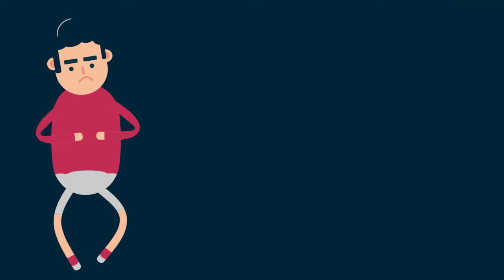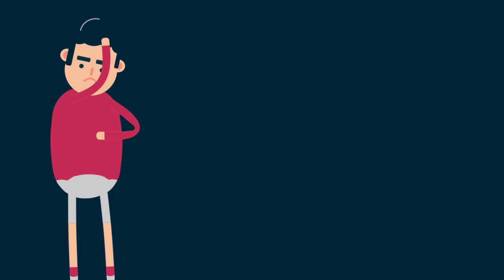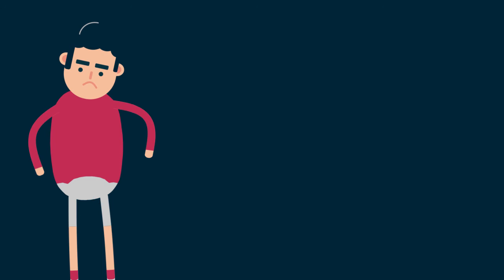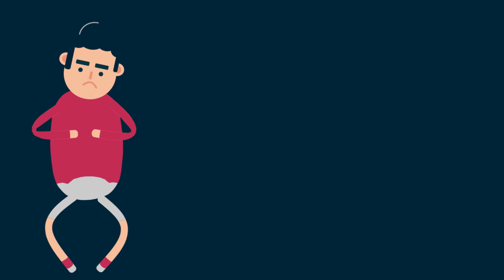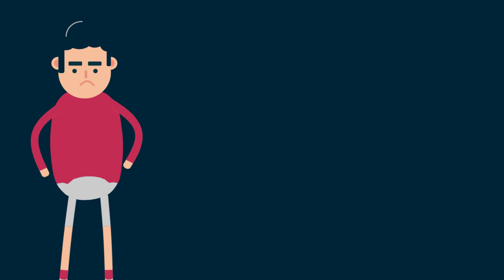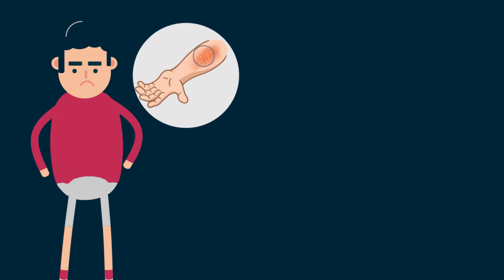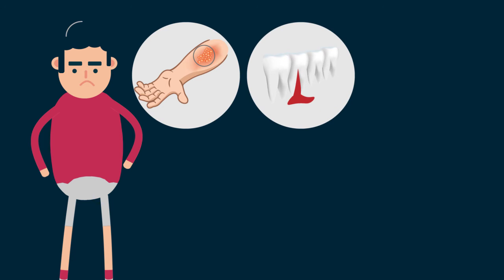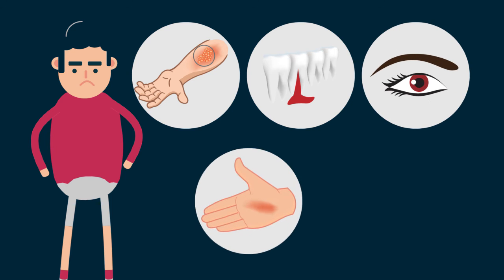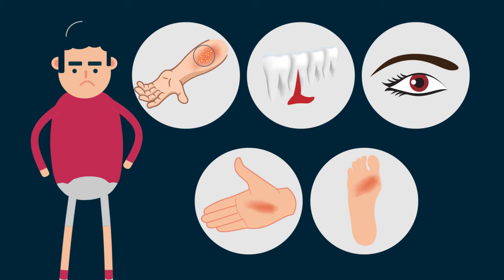Dengue symptoms include sudden illness, headache, fever, exhaustion, severe muscle and joint pain, swollen glands, and rashes — including a skin rash similar to measles. Other signs include bleeding gums, severe pain behind the eyes, and redness in the palms and soles.